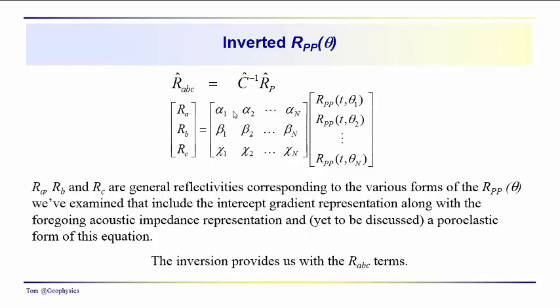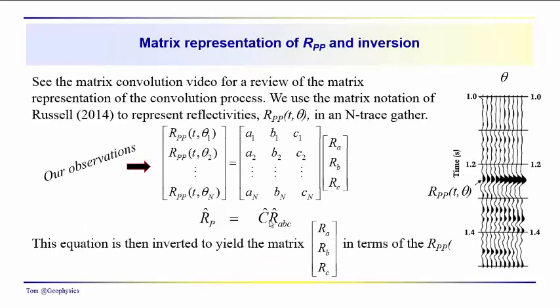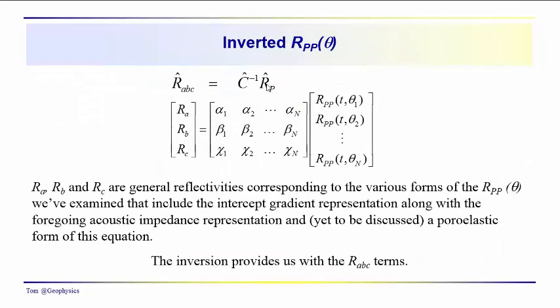So instead of 3 columns with N rows, we have in the inverted form R, A, B, C is equal to the inverse of this matrix that we have here, times our observations. So this would be the inverted form.